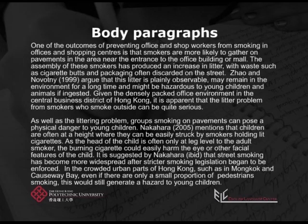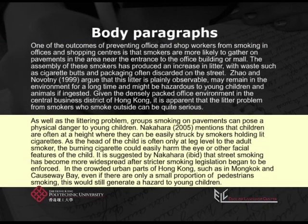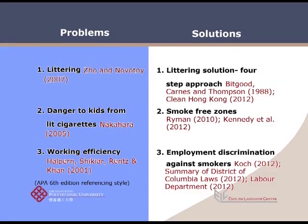Next, we're going to look at a couple of body paragraphs and see how they are structured. These two paragraphs focus on two problems: first, the littering problem, and second, the danger to children. Remember that a paragraph should deal in one idea only. Remember the rough plan our writer had at the beginning — there were six points, meaning six body paragraphs, one idea for each paragraph.